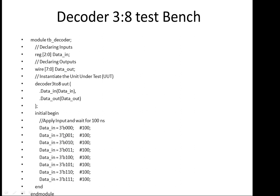First we give data_in the value 3'b000. After 100 nanoseconds we apply 3'b001, then after another 100 nanoseconds 3'b010, and so on — you can also write this in a loop. We continue with 3'b011, 3'b100, 3'b101, and so on until all combinations are covered.